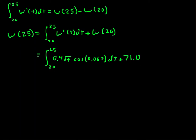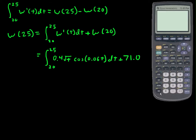They expect you to get a numerical solution for this by going to math 9, the numerical integral of this function. So 0.4 times the square root of - I don't have x in here, doesn't matter, I could have had a t - multiplied by the cosine of, make sure your calculator's in radians of course, 0.06 x, as x goes from 20 to 25,